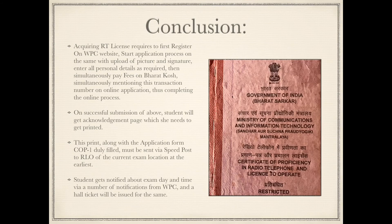To conclude, acquiring the RT license requires: first, registering on the WPC website; second, starting your application process with upload of picture and signature; and third, entering all personal details as required. Simultaneously, pay the exam fees on Bharatkosh and mention the transaction number on the online application, thus completing the online process.